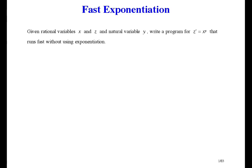The first problem today is fast exponentiation. Given rational variables X and Z and natural variable Y, write a program for Z prime equals X to the power Y. If exponentiation is one of the implemented operations then this problem is trivial — just one assignment. So let's say it's not. It's certainly not one of the hardware operations of the computer, so if it is provided in a programming language it's only because someone programmed it, and today that someone is us.